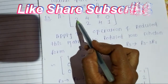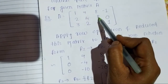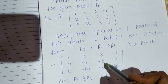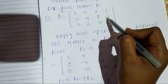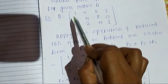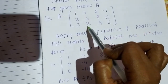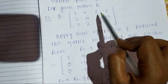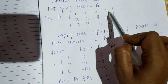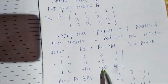The first row remains as is. For the second row: 2 minus 2×0 = 0; 4 minus 2×4 = 4 minus 8 = -4; 8 minus 2×8 = 8 minus 16 = -8; and 0 minus 2×(-1) = 0 plus 2 = 2. For the third row: 3 minus 3×1 = 0; 2 minus 3×4 = 2 minus 12 = -10; 4 minus 3×8 = 4 minus 24 = -20; and 1 minus 3×(-1) = 1 plus 3 = 4.